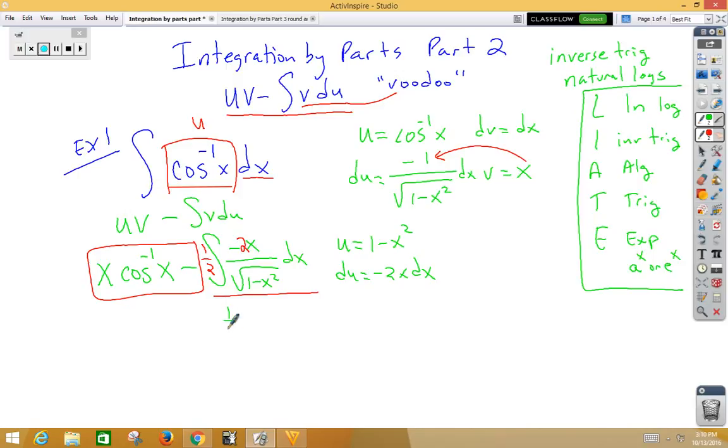So now I've got a 1 half integral, 1 over root u du. I can either slide this 2 back in, or I can divide by 2 and multiply by 2 to change the problem. The 2's cross out. This now is something we have memorized. That's just the square root. So bringing everything down, I've got x inverse cosine x minus root, my u was 1 minus x squared plus c.